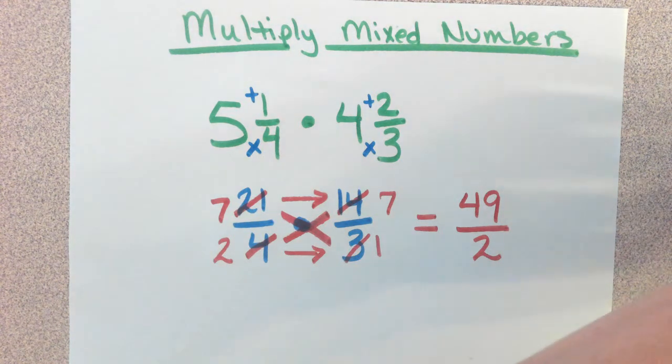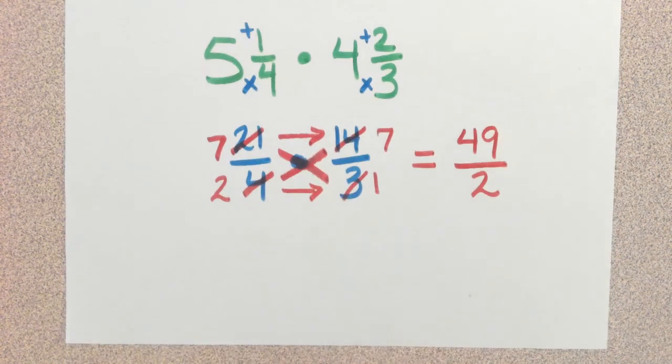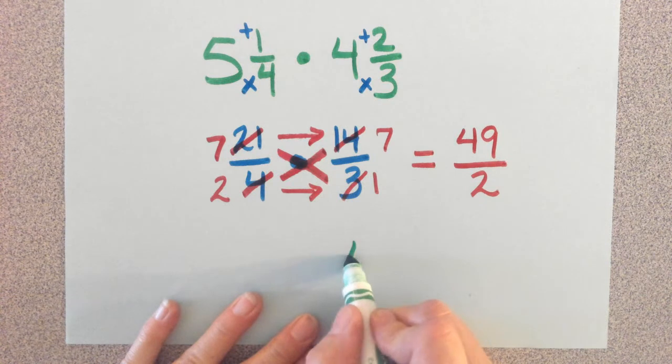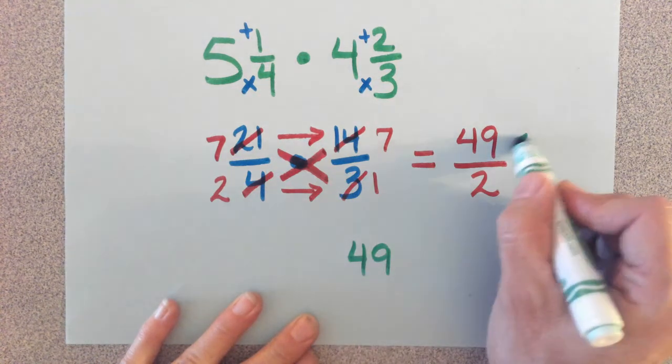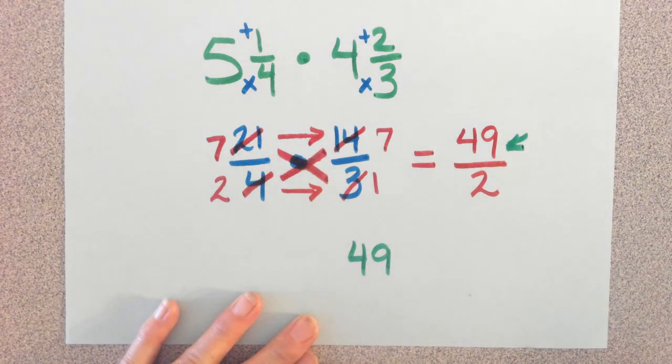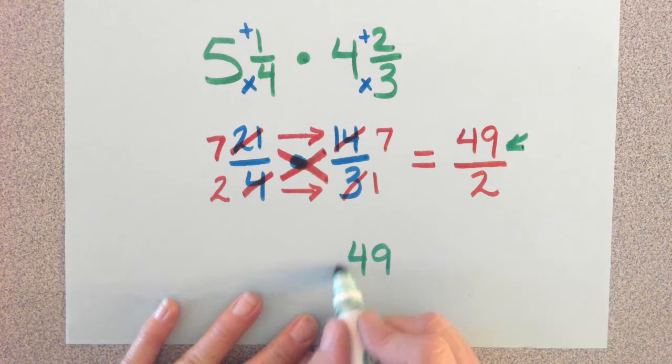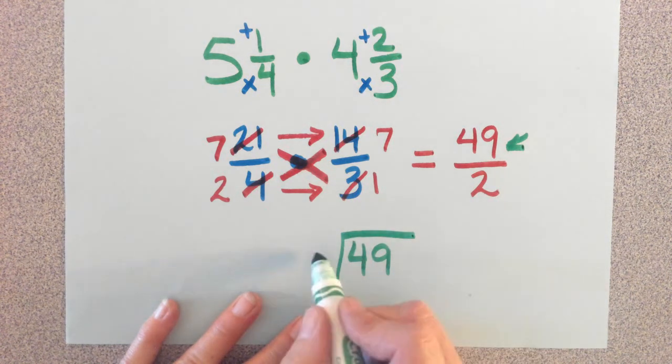Now we got forty-nine over two. That is just a simple division problem. So move it up. Forty-nine is the top dog, and the top dog goes in the house. And the bottom dog goes outside.